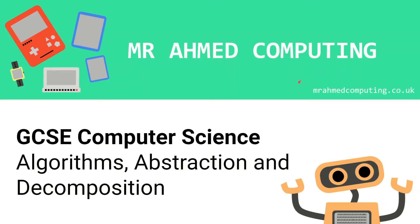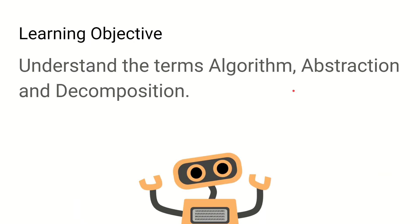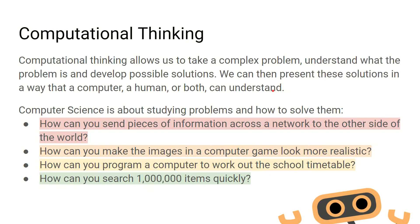Today we're looking at algorithms, decomposition and abstraction. Our learning objective is to understand these terms and know how they are applied in computer science. Algorithms, abstraction and decomposition are all strands of computational thinking. Computational thinking is the process of understanding a problem and knowing how to create the most effective solution on how to solve this problem.